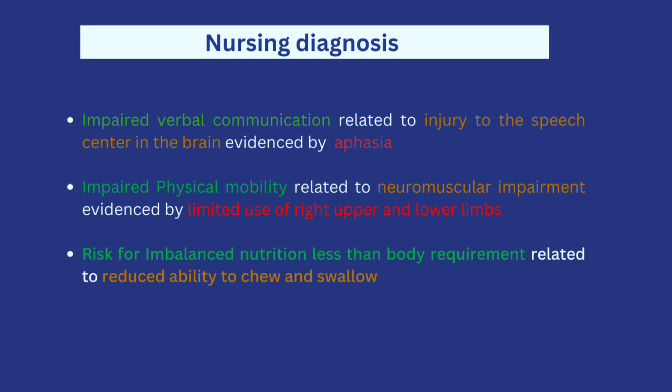The second one is impaired physical mobility, related to neuromuscular impairment, evidenced by limited use of right upper and lower limbs. The scenario clearly stated that Mr. Ajao cannot move on his right side. The last one is risk for imbalanced nutrition less than body requirements, related to reduced ability to chew and swallow. The scenario also pointed out that Mr. Ajao cannot chew or swallow easily. These three diagnoses were drawn directly from the scenario.